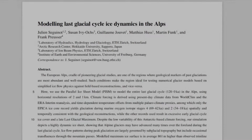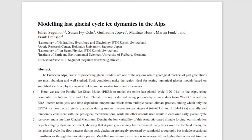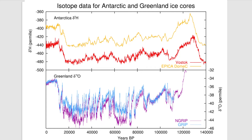How does it work? In this research, they used the Parallel Ice Sheet Model (PISM) and modeled the last 120,000 years — basically the last maximum glaciation that happened on our planet. They used a horizontal resolution of two and one kilometer. They used climate forcing based on present-day climate and time-dependent temperature offsets from multiple paleoclimate proxies, including marine oxygen isotope data from ice cores, reconstructing up to stages 4, 2, and more recent ones.